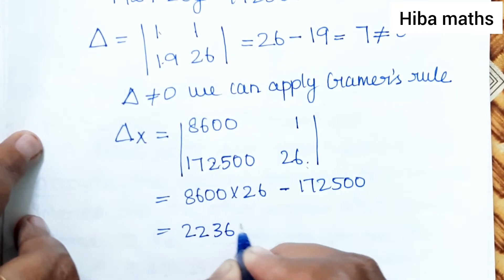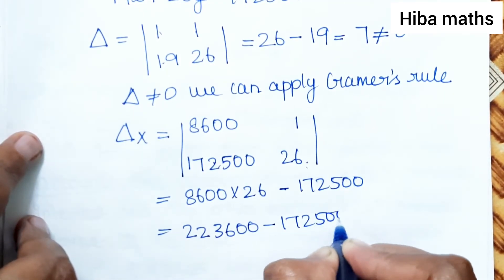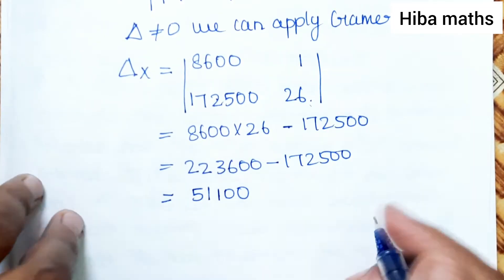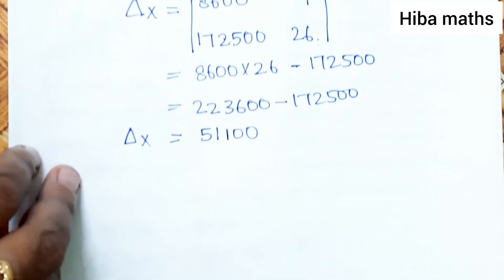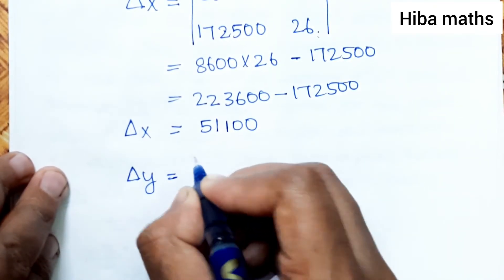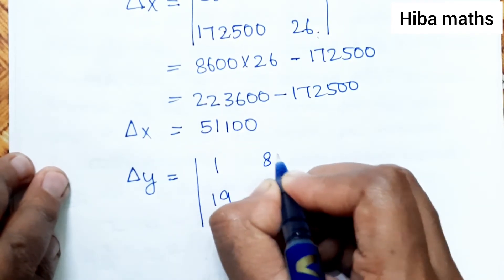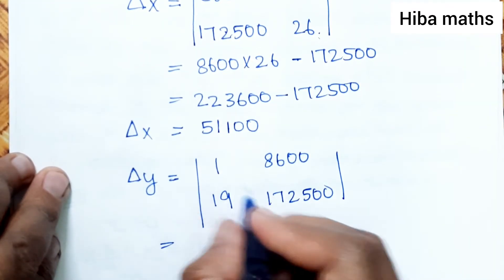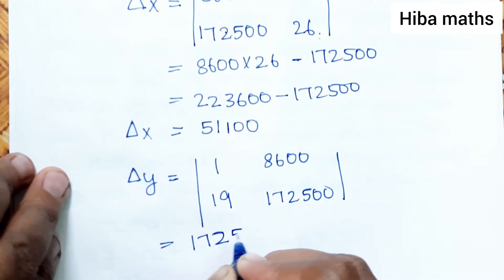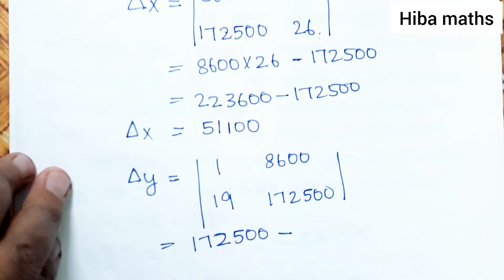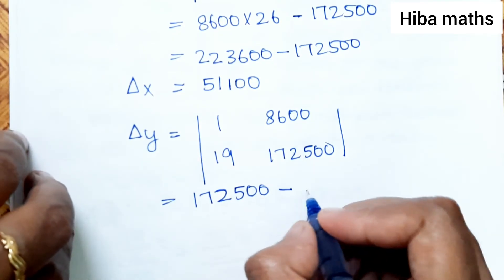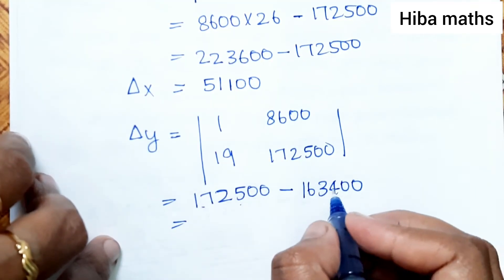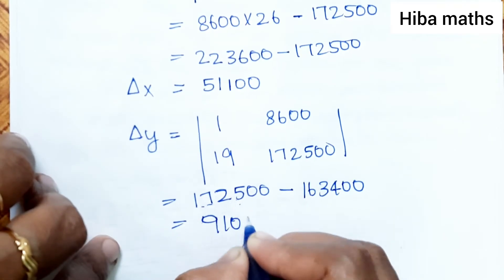This gives 223600 minus 172500, which equals 51100. This is Del X. Del Y has no change in the first column. The second column becomes 8600 and 172500. Multiplying: 1 times 172500 minus 19 times 8600 equals 163400, giving Del Y equals 9100.